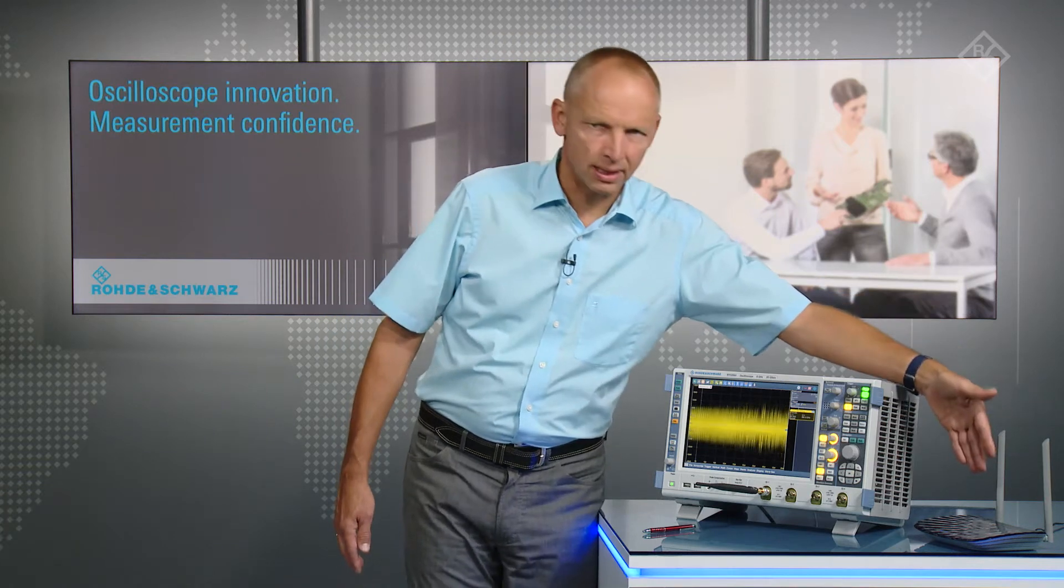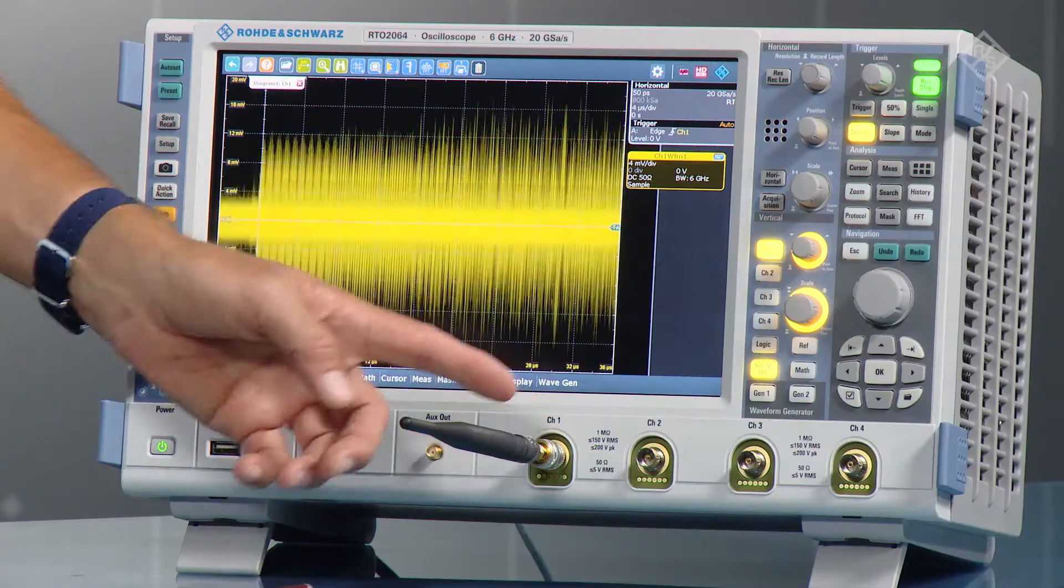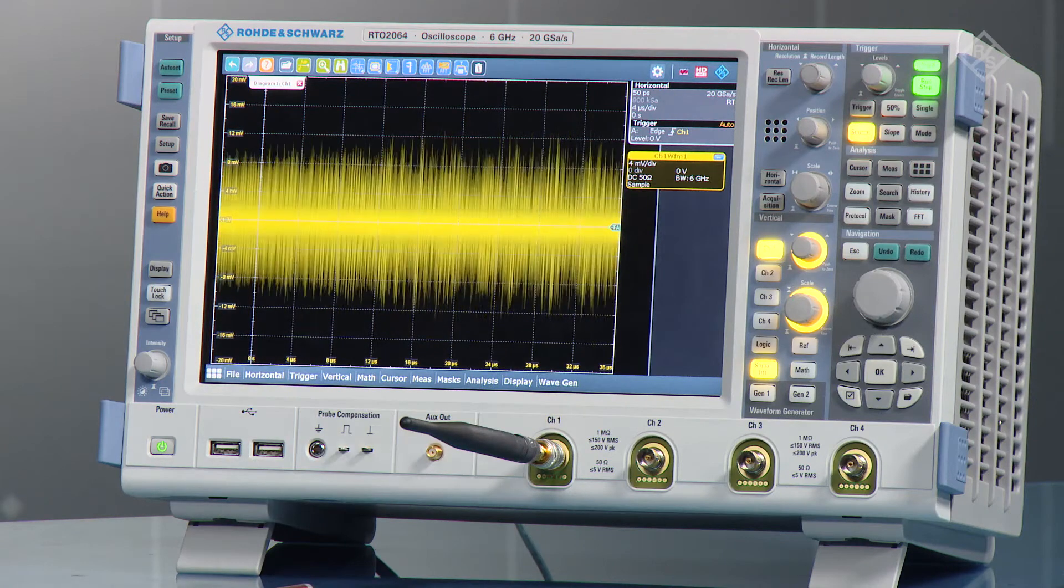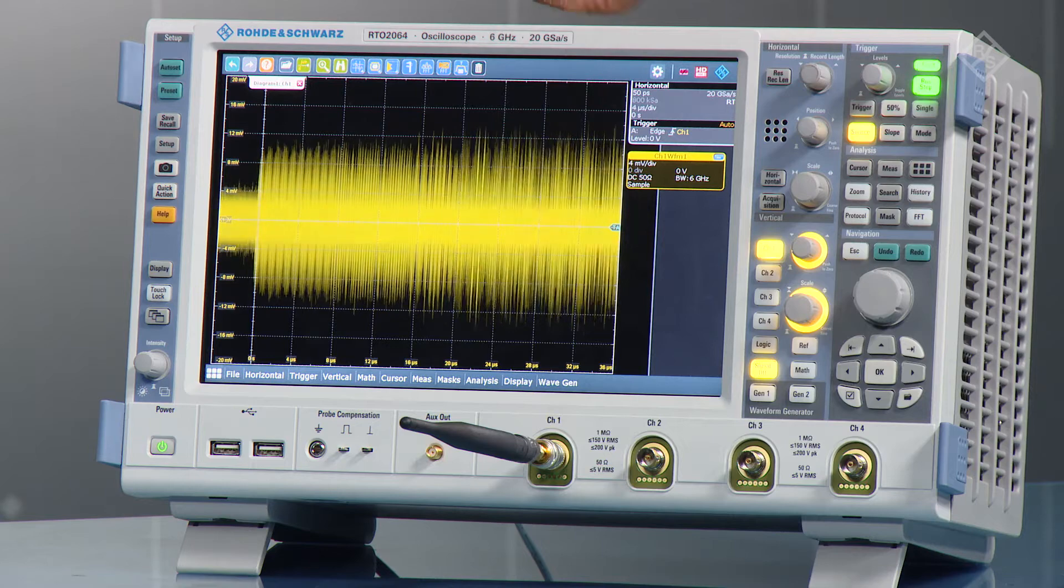To show you that, I have an access point that is emitting in the 5 GHz range Wi-Fi signals. I capture that signal with an antenna and feed it directly into channel 1. What you see on the display here is the Wi-Fi signal captured from the antenna.